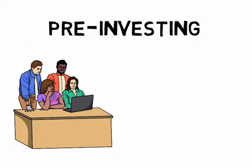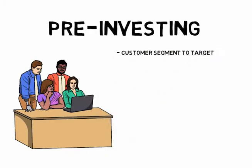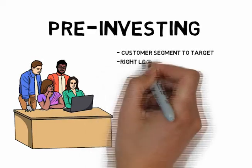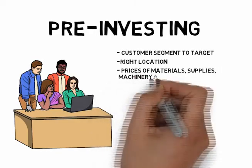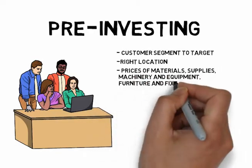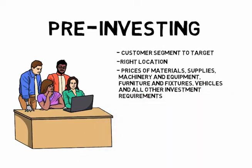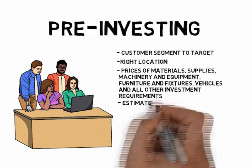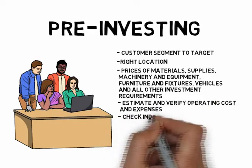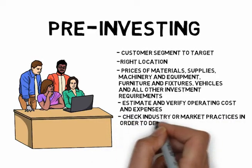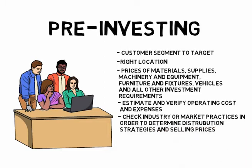The entrepreneur should have likewise assessed what customer segment to target and pinpointed the right location. He or she should have canvassed the prices of materials, supplies, machinery and equipment, furniture and fixtures, vehicles, and all other investment requirements. Operating costs and expenses should have been estimated and verified. Industry or market practices should have been checked in order to determine the best distribution strategies and the most attractive selling prices.